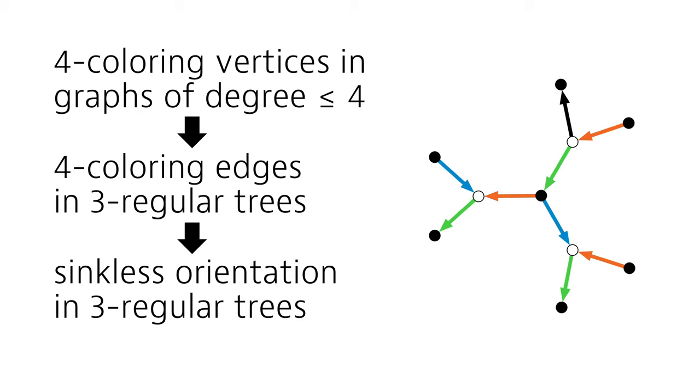So it's a sinkless orientation. So if we now know that sinkless orientation is hard to solve, we also know that edge coloring of 3-regular trees with 4 colors has to be hard to solve.